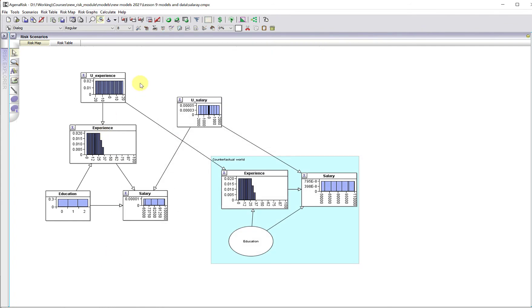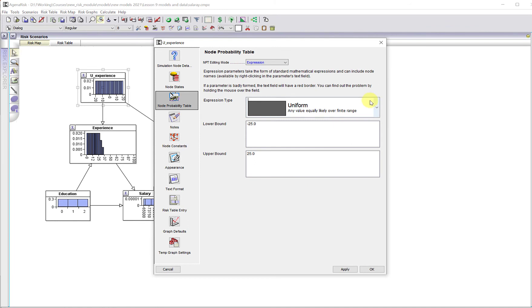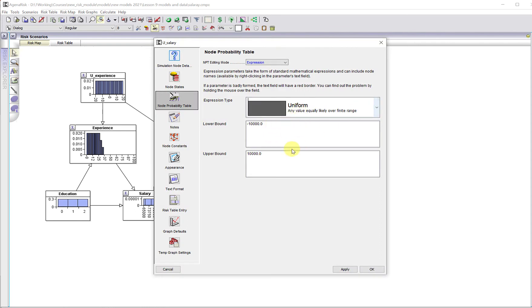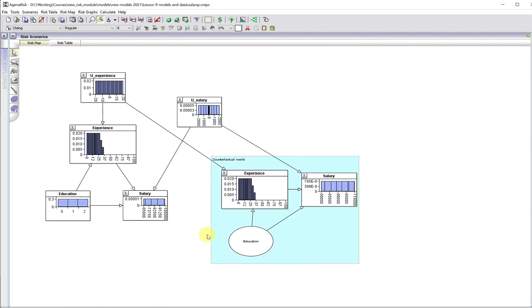The one change that we do have to make for a Bayesian network model is that because it's going to learn the U values when you've entered evidence, we have to make some prior assumptions about those. And I'm simply assuming uniform priors here, assuming that the experience can go from minus 25 to 25. Because remember, this is what's going to be unique to the person, where the mean should be zero, but they can go above or below that as an addition to the real experience. And similarly with salary. So that's just defined as uniform from minus 10,000 to 10,000. Then all I've done is simply taken these three nodes and made a copy of them over here.